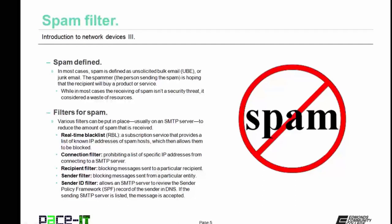While in most cases the receiving of spam isn't a security threat in itself, it is considered a waste of resources, which in a way is a security threat. There are various filters available for spam. These can be put in place, usually on an SMTP server, to reduce the amount of spam received by end users. These filters include the real-time blacklist, or RBL — a subscription service that provides a list of known IP addresses of spam hosts, allowing them to be blocked from reaching the SMTP server. Then there is the connection filter, which prohibits a list of specific IP addresses from connecting to an SMTP server.